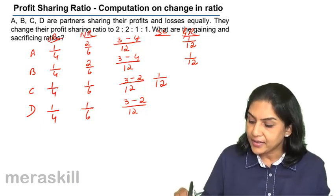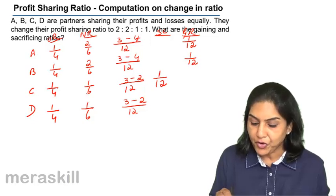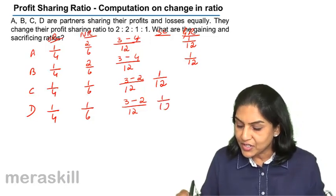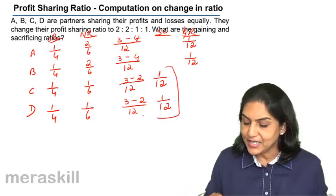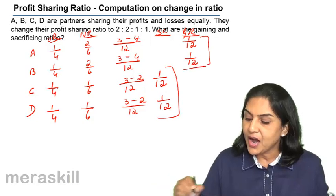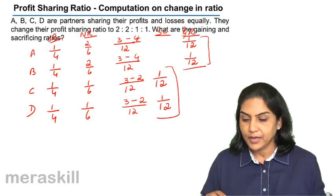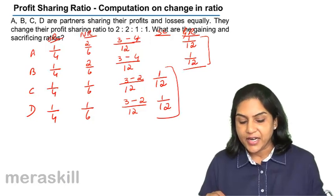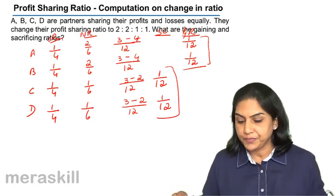C had a profit sharing ratio of 1 by 4. It has become 1 by 6. C stands to lose. D stands to lose. Their sacrificing ratios are 1 by 12 and this is 1 by 12. The gains made by A and B are 1 by 12 and 1 by 12. So A and B stand to gain. C and D stand to lose with this change in profit sharing ratio.